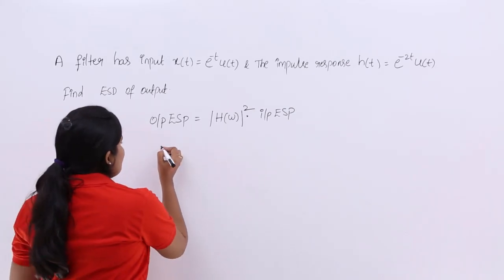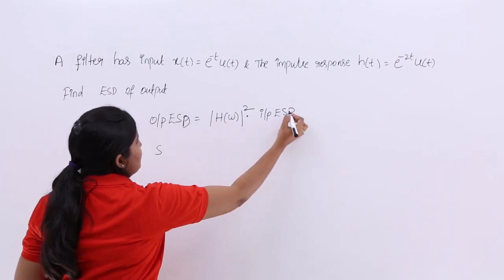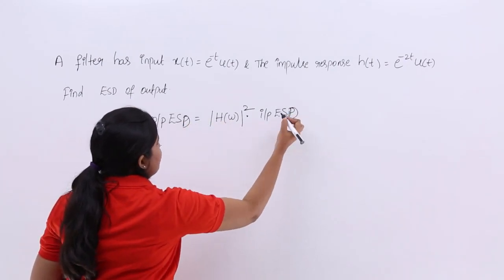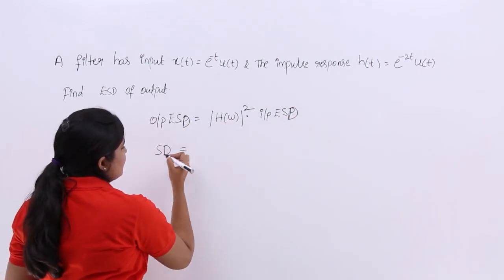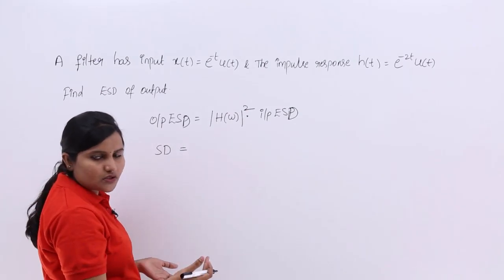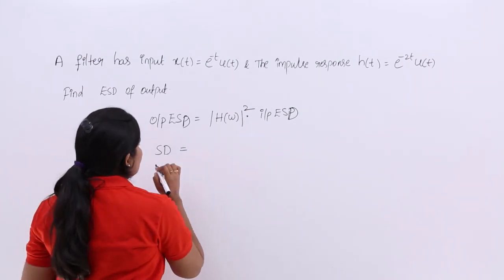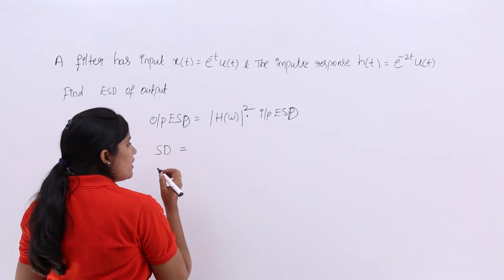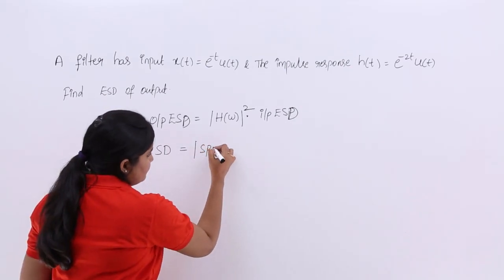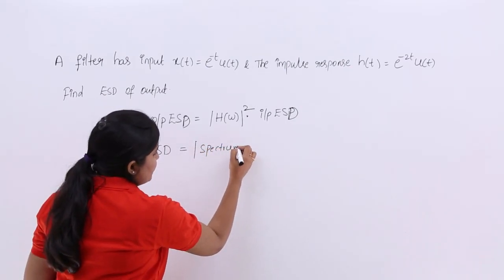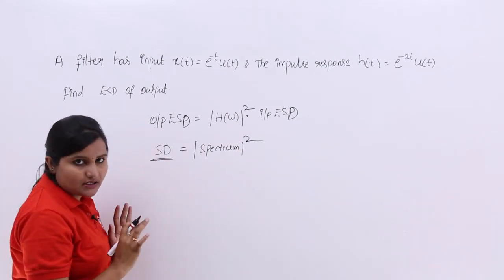The energy spectral density (ESD) of a signal equals the modulus of its spectrum squared — that is, |X(ω)|². This is the formula used to calculate the spectral density of a signal.